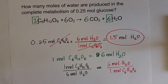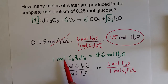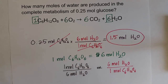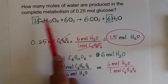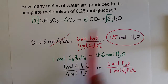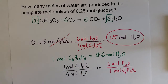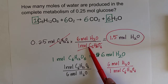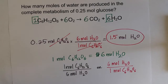For this stoichiometric calculation, we used the same concept we've used to convert values: develop an equality, which is a relationship. That relationship comes from the coefficients of the balanced chemical equation, telling us the relationship between two different molecules. From every equality, we can make two conversion factors — putting the units we want to cancel on the bottom and the units we want for our final answer on top.